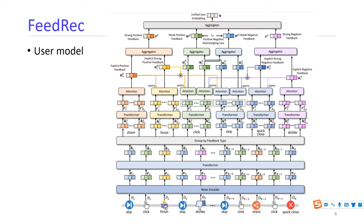These strong feedbacks are used to distill real weak positive or weak negative feedbacks from both click and skip behaviors, because some clicks are positive while some can be negative, and for skip behaviors some of them can also be positive. The attention query is used to select from the click and skip feedbacks. Since the positive and negative feedbacks do not necessarily be disentangled automatically, we introduce an additional positive-negative disentangling loss to regularize the two embeddings to be orthogonal, so that the positive and negative feedbacks do not overlap.